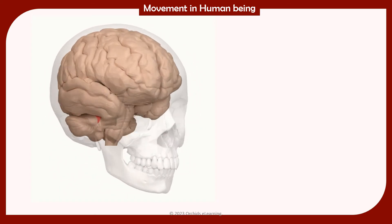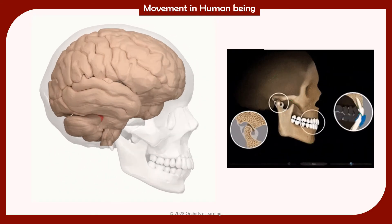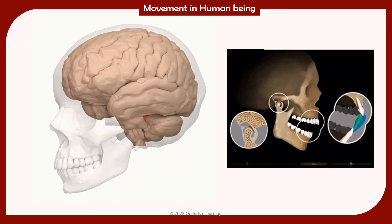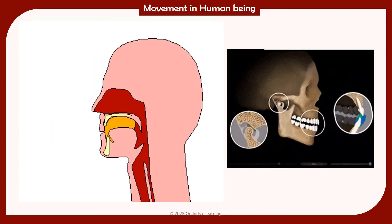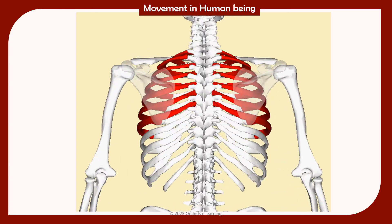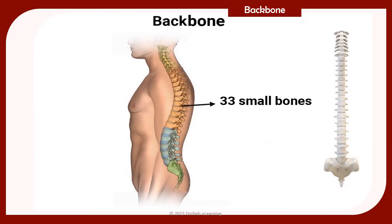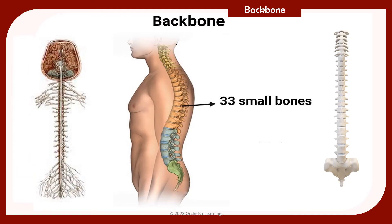The skull protects the brain from injury. All bones in the skull are fixed except the lower jaw. The lower jaw can move, which allows us to talk and chew food. The rib cage provides protection to the heart and lungs. Human beings have 12 pairs of ribs. You can feel your ribs by running your fingers across your chest. The backbone is made up of 33 small bones called vertebrae, and it surrounds and protects the spinal cord.